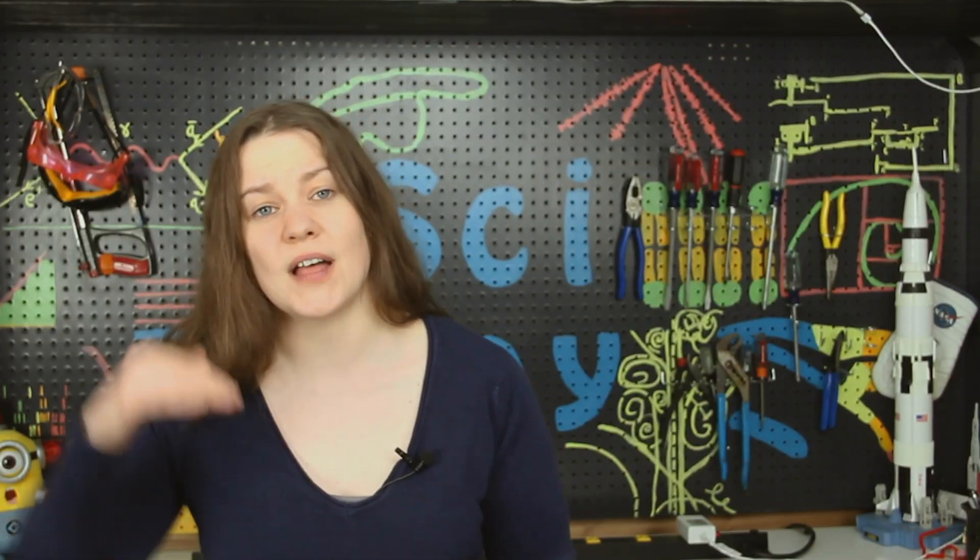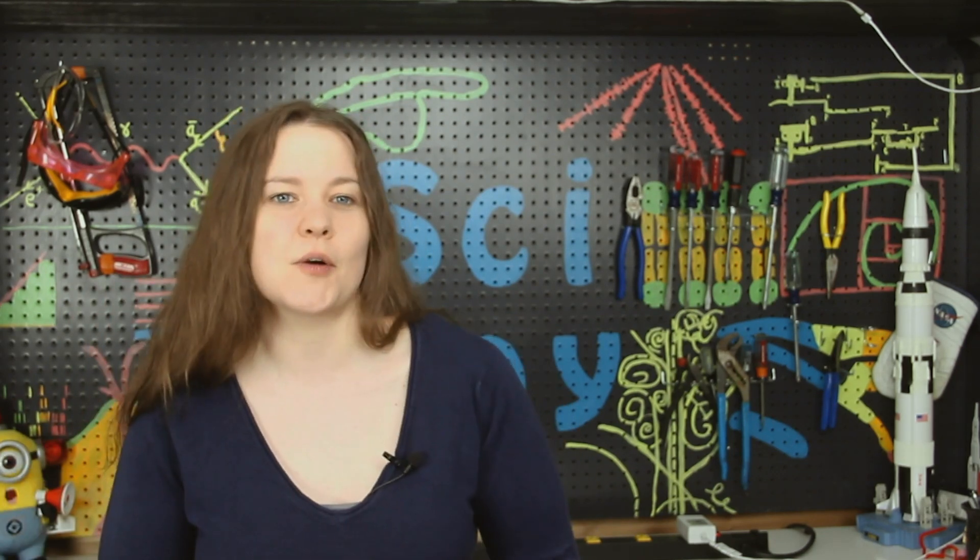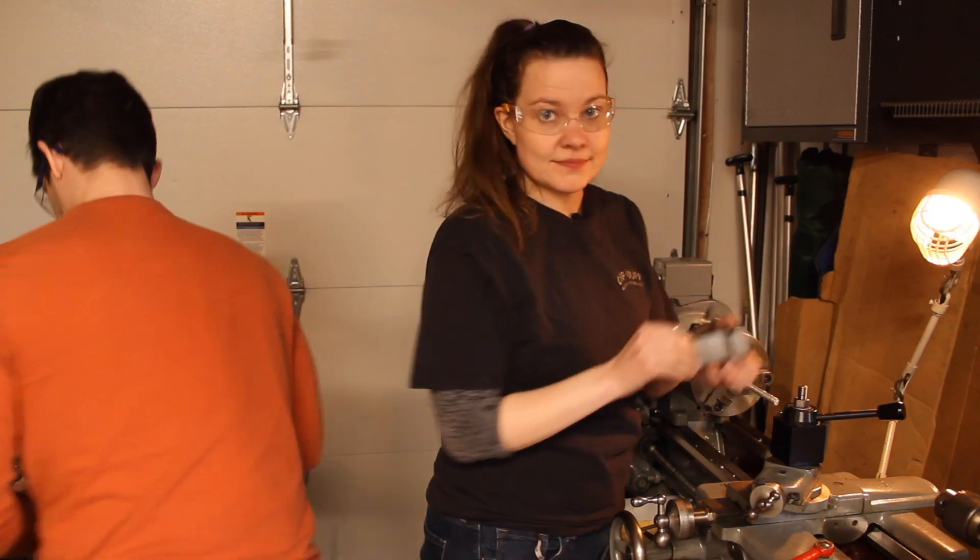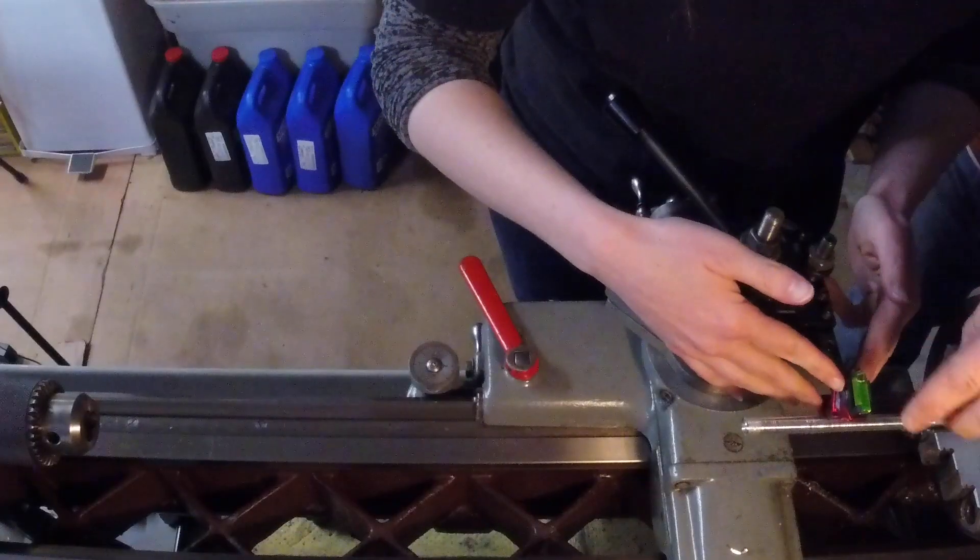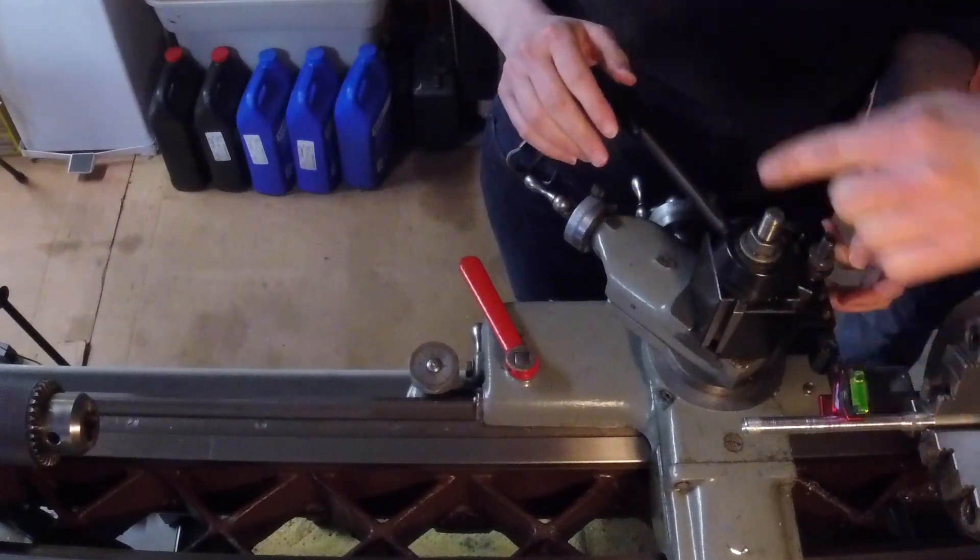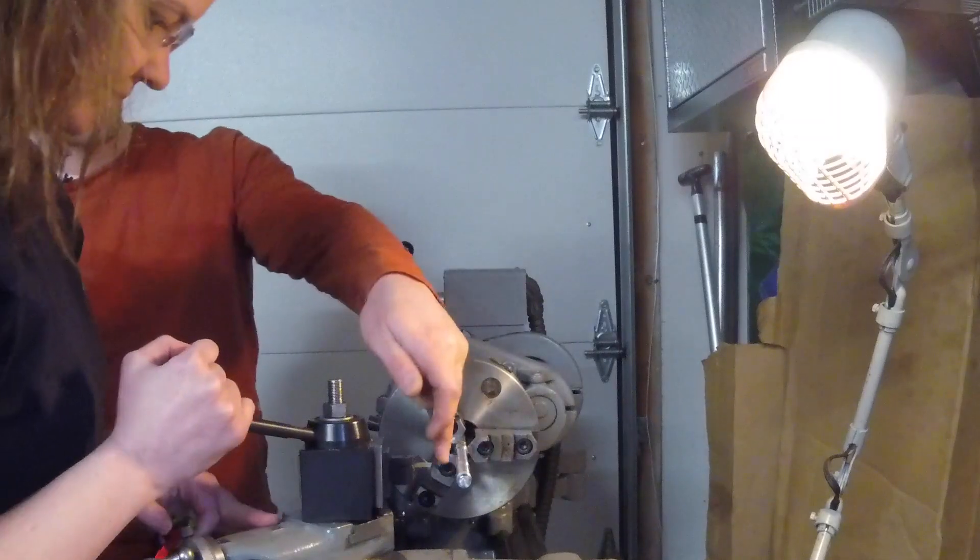Then we put the cutting tool in and used a level to decide what height we needed so the cutting tool was actually going to go into the material. Now notice how that's way high right now. So you're going to loosen it up. And you want it at level or slightly below. If it's high, you can't cut.